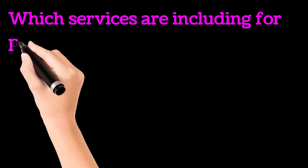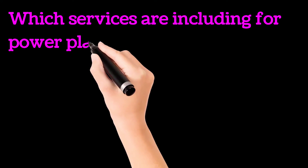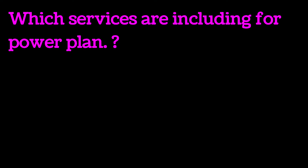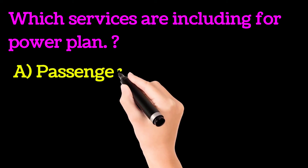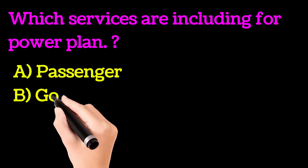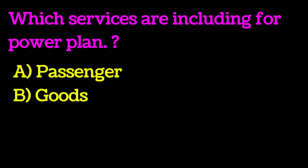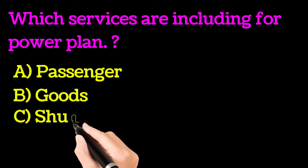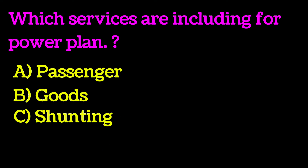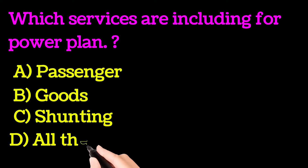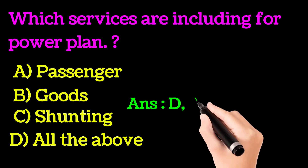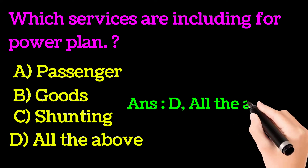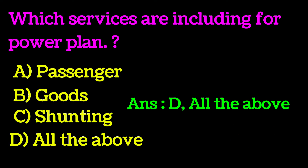Today's first question: which services are included for power plan? Option A: passenger services loco. Option B: goods services loco. Option C: shunting locos. Option D: all of the above. The correct answer is all of the above. While preparing a power plan, we consider passengers, goods, and shunting locos.